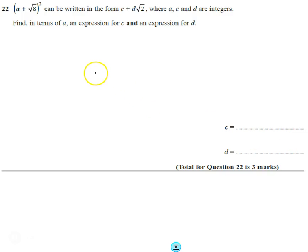Alright, okay. So third question: we need to show that this can be written in the form c + d√2. That's interesting because we've got a √8 there, so we'll do that in a sec. And then we want to find, in terms of a, an expression for c and an expression for d.